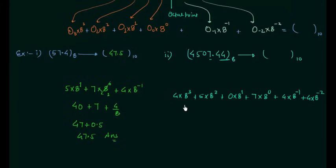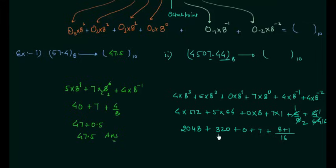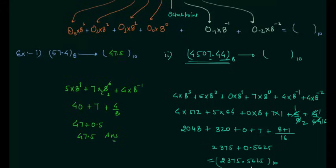Now we will solve this. 4 multiplied by 512 is 2048. 5 multiplied by 64 is 320. 0 multiplied by 8 is 0. 7 multiplied by 1 is 7. For the fractional part we have 1 by 2 and 1 by 16, giving 8 by 16 plus 1 by 16. So 2048 plus 320 plus 0 plus 7 is 2375, and 9 by 16 is 0.5625. This gives us 2375.5625 in decimal. So the decimal equivalent of this octal number is 2375.5625.